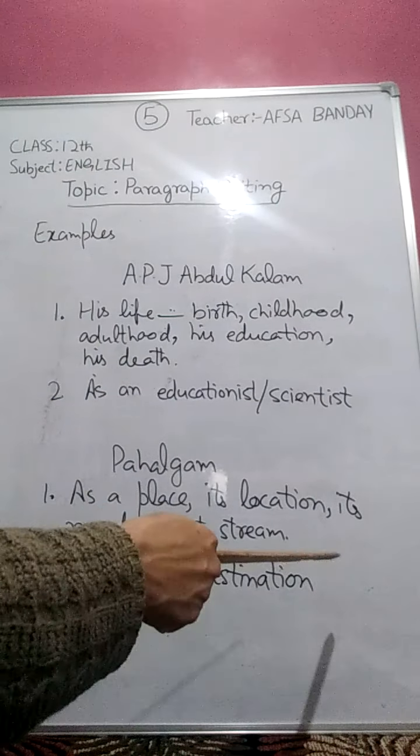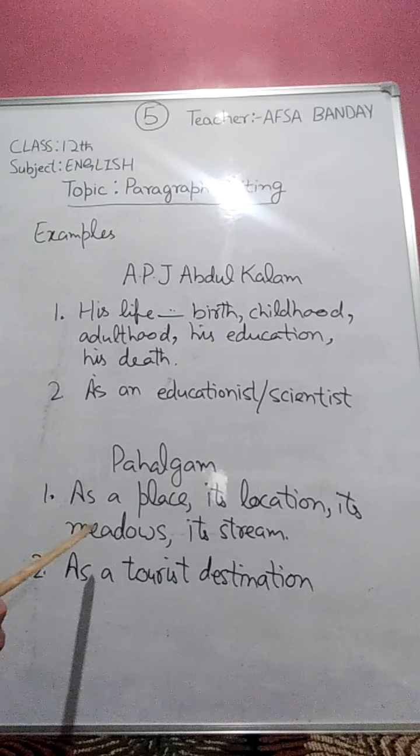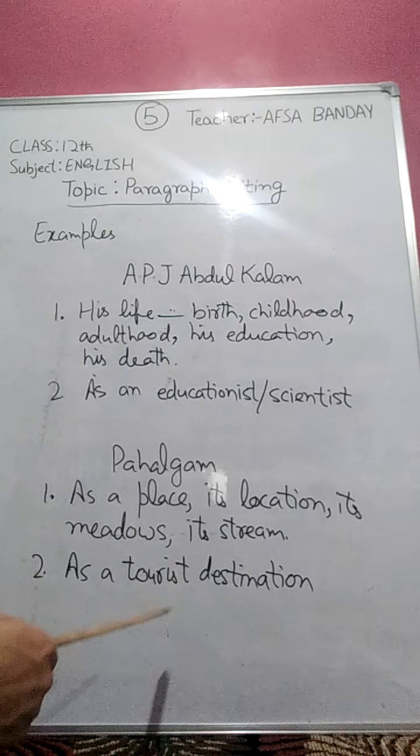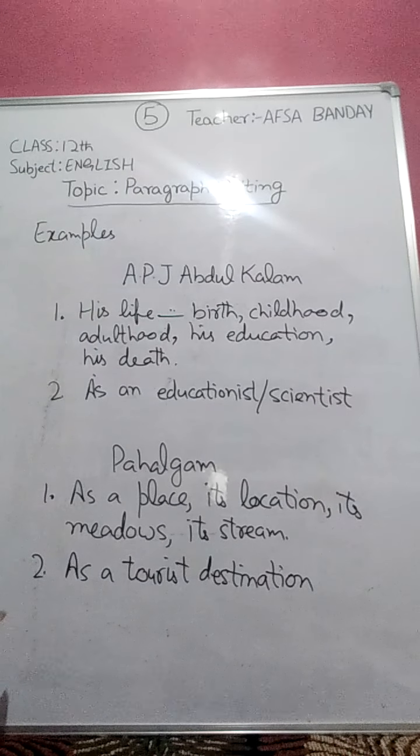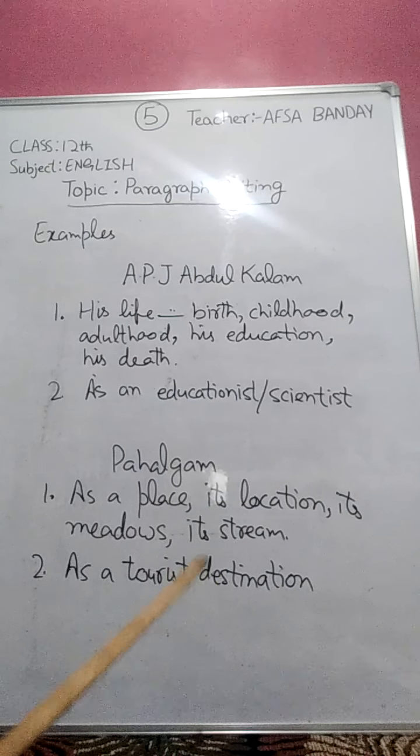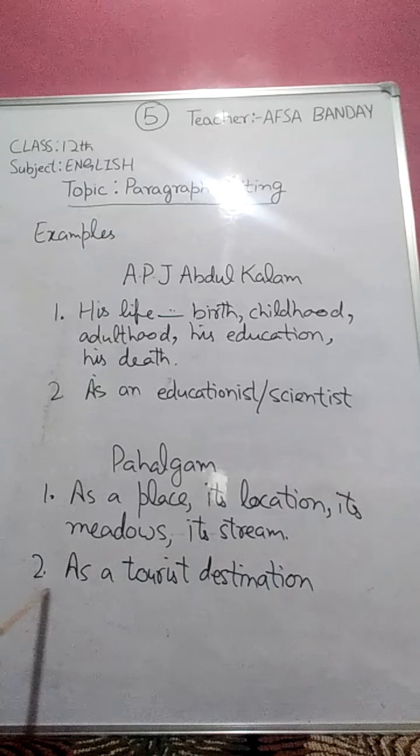Similarly, let us take another example. If you are supposed to write a paragraph on a place — let it be Pahlgaam — there are again two main ideas you can choose. If you want to write it as a place, you will write its location from Srinagar, its altitude, its meadows, its streams, and snow-capped mountains. Or another main idea: Pahlgaam as a tourist destination, where you will write how it attracts tourists not only from our country but from throughout the world, and how it provides pleasure during summer and winter through skiing, river rafting, and so on.